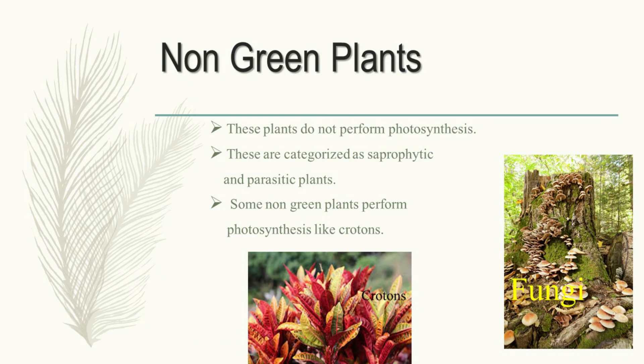Now we are going to discuss non-green plants — the only remaining topic of this chapter. There are some non-green plants that do perform the process of photosynthesis, like crotons. In crotons, leaves are red in color because of the presence of carotenoids and anthocyanins along with chlorophyll, where chlorophyll is in a hidden form. But some plants do not perform photosynthesis at all, and these are categorized as saprophytic and parasitic plants.